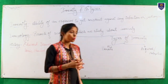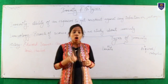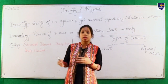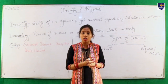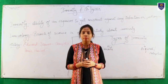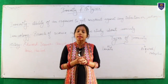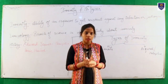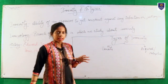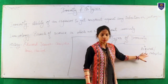So we have heard what is immunity and what is immunology. How can we get immunity? There are basically two types of immunity: innate immunity, and acquired or adaptive immunity.